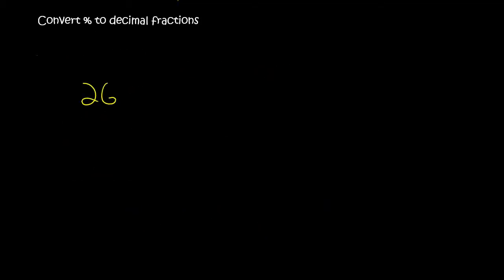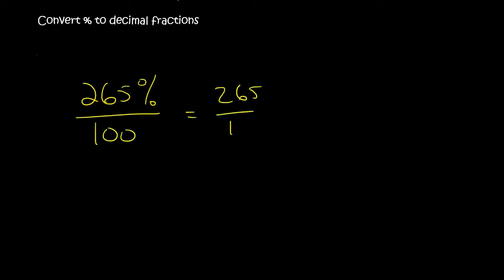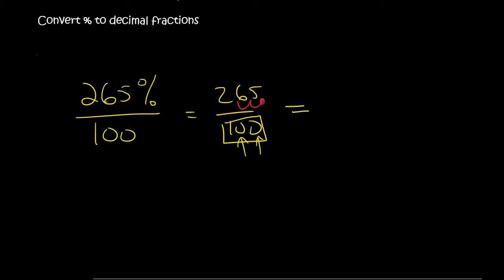Now let's say we had 265%. Step one: divide by 100, so that gives you 265 over 100. At least now the percentage sign is gone. Then you just convert that into a decimal by realizing that there are two zeros. The decimal is currently over here, so you move it two places, and there you have it: 2,65.